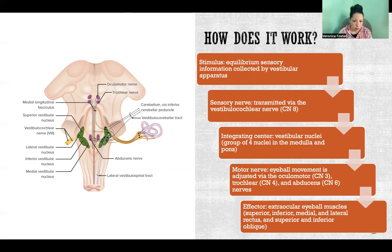Then we send a response via motor nerve. In this case, because our eyeballs are moved by three different cranial nerves, the motor response in this reflex arc is being carried by oculomotor, which is cranial nerve number three, trochlear nerve, cranial nerve number four, and abducens, which is cranial nerve number six.